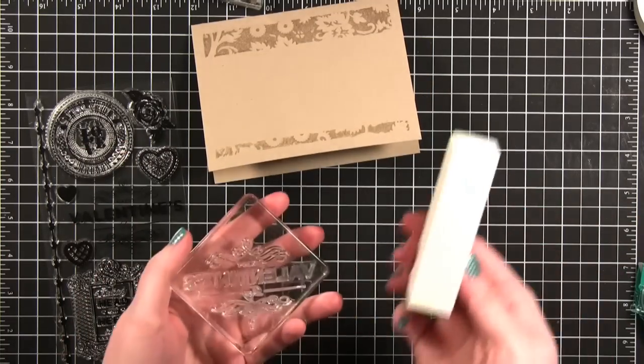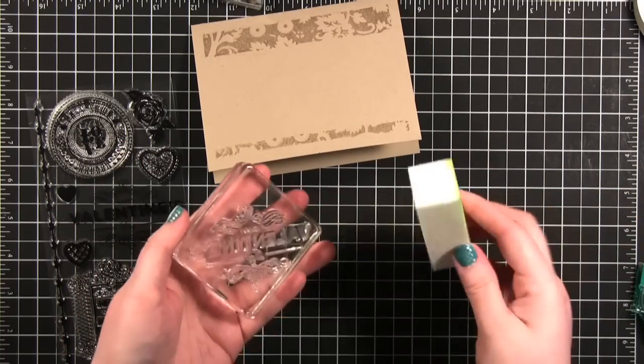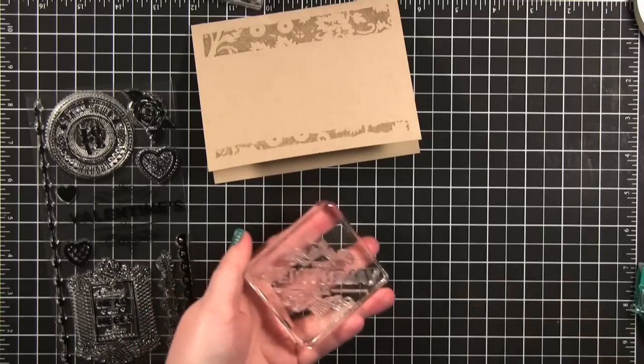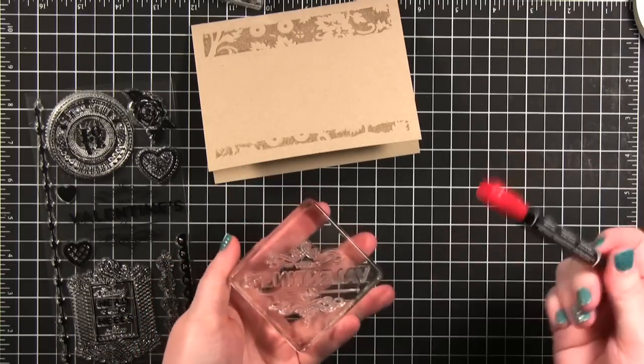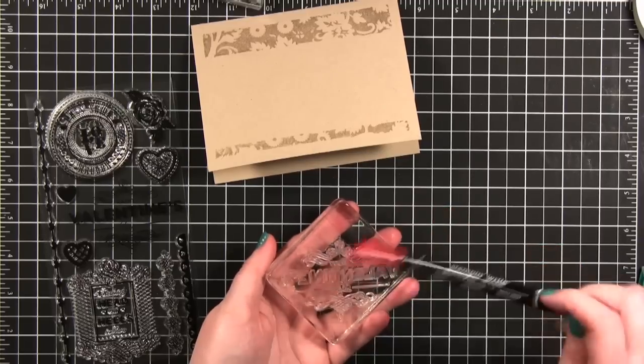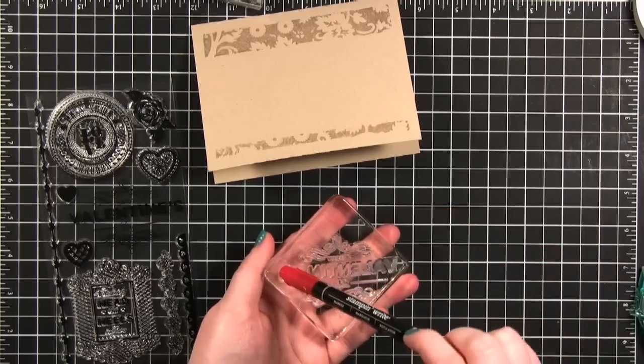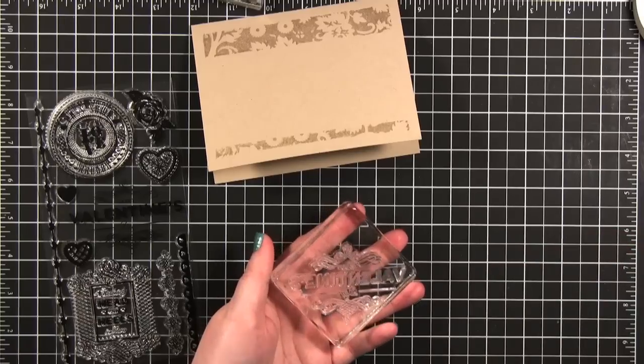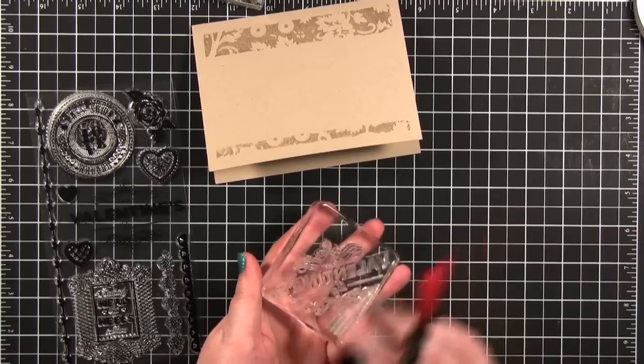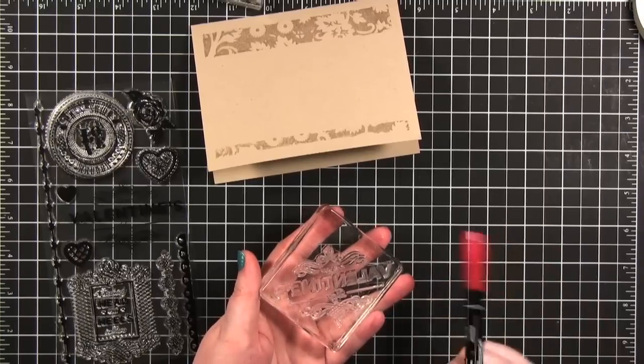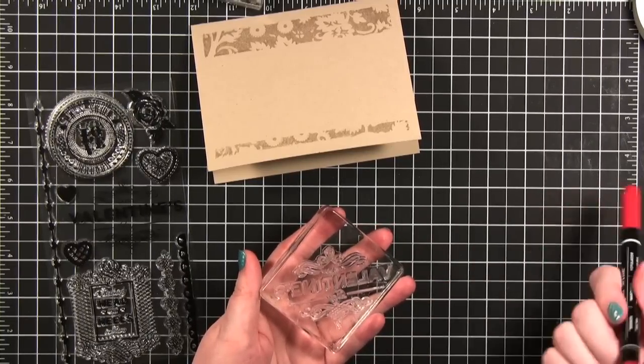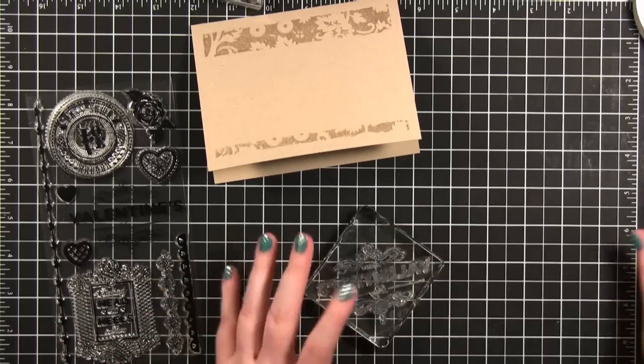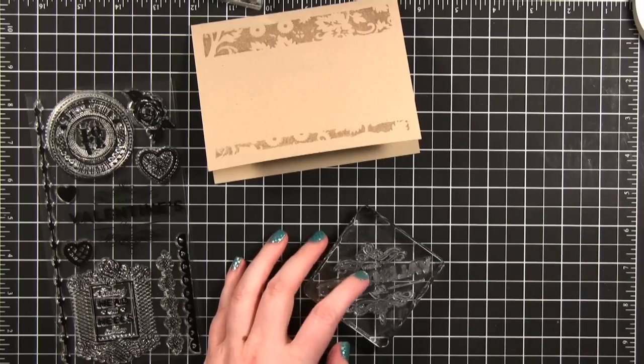I've already taken a sanding block and just lightly sand off the very itty bitty top surface of this stamp. That's because I'm going to be using some markers. It's just going to make it a whole lot easier to have the ink not bead up on the stamp. Some clear stamps have a really slick surface and so it's hard to use with some more water based or dye based inks. So this is just an easy way to get around that problem. It doesn't really harm the stamp. It should be just fine.